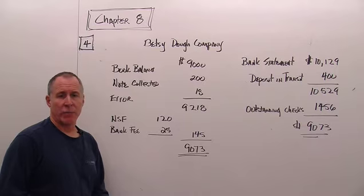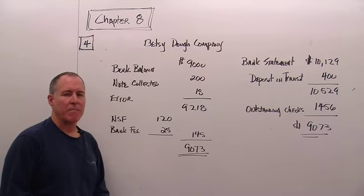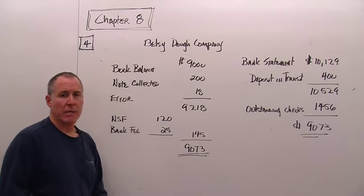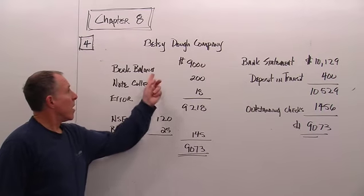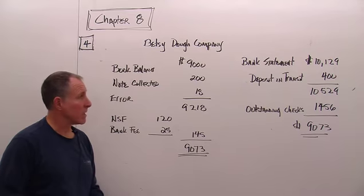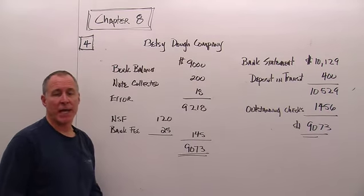Now, in a bank reconciliation, what we are doing is we are looking at the bank statement ending balance and the balance in the cash account, the checking account on our books or the ledger account for checking. And in our particular case, our books say that our balance is $9,000 at the end of the month. The bank statement comes in and says it's $10,129.